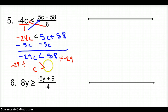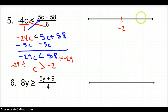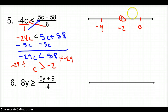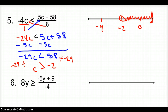c is now greater than negative 2. To graph: negative 2 in the middle, something bigger on the right, something smaller on the left. It's an open circle thanks to the greater than sign, and we can follow the arrow because the variable is on the left.